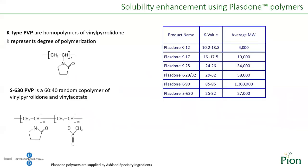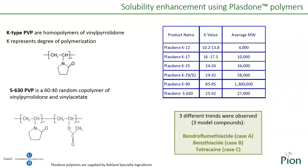The polymers used were Plasdones of the K-type, which are homopolymers of vinylpyrrolidone that can interact with the drug by hydrogen bonding through either the nitrogen or the carbonyl group on the pyrrolidone ring. Another Plasdone tested was S630, which is a copolymer of vinylpyrrolidone and vinylacetate. To check the effect of these Plasdones on drug solubility, Chexol experiments were performed using physical mixtures of Plasdones and drugs. Three different trends were observed in relation to the supersaturation of the studied compounds.